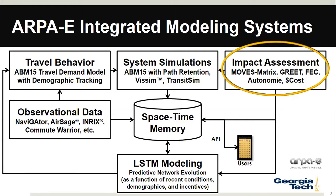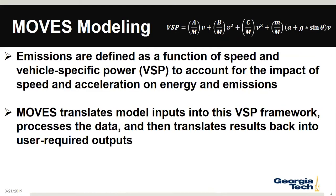So before we talk about MOVES Matrix, we should talk about the MOVES model. This is the U.S. Environmental Protection Agency's Motor Vehicle Emissions Simulator. It is the model required for federal analyses for things like conformity, regional transportation planning, and emissions inventory assessment. Emissions in this model are defined as a function of speed and vehicle-specific power. This is a real change from the previous modeling framework where an average speed emission rate was used. The average speed on an arterial moving at 20 miles an hour at free flow is very different than on a freeway with stop-and-go traffic ranging from 5 to 45 or 50 miles an hour.